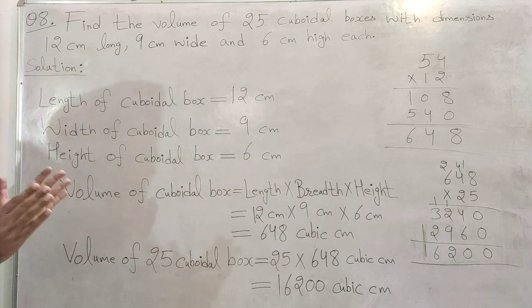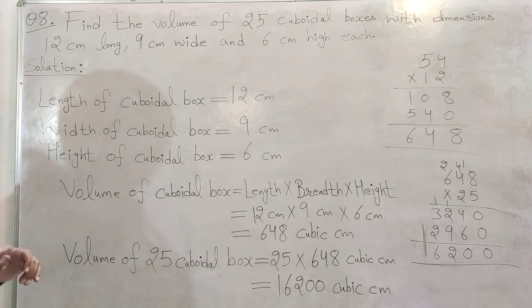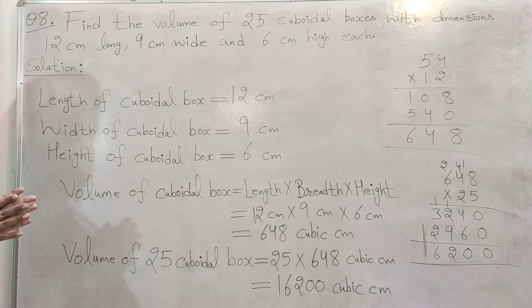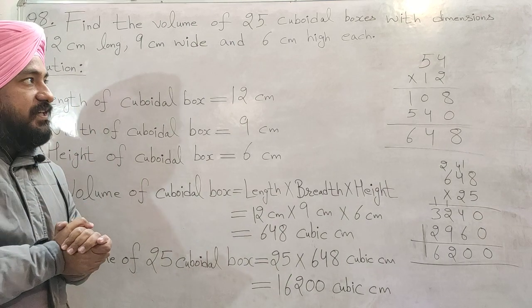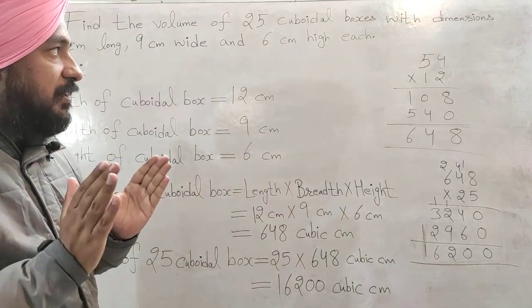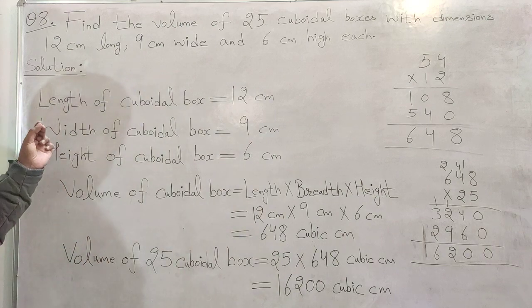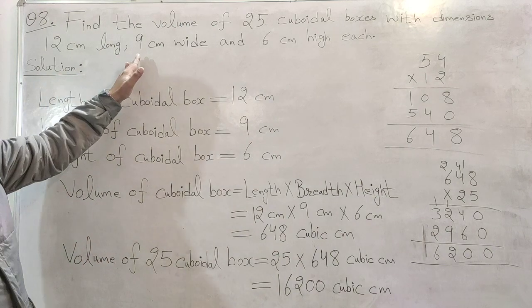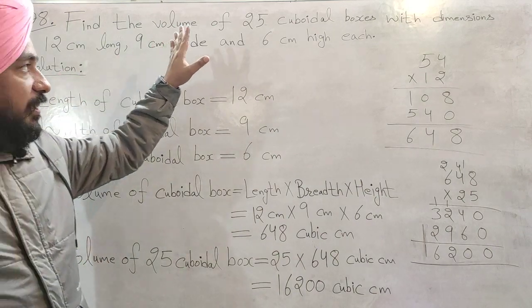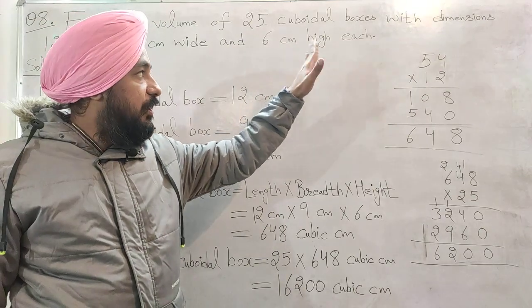Question number 8. Find the volume of 25 cuboidal boxes with dimensions 12 cm long, 9 cm wide and 6 cm high each.